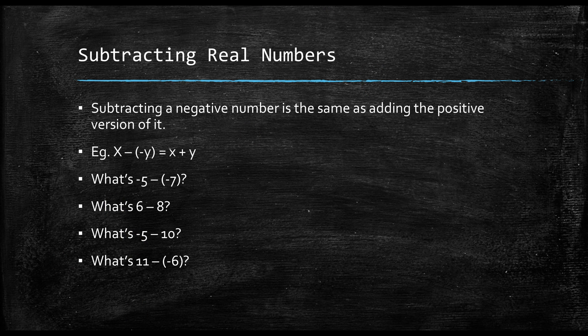For the first example, negative 5 minus negative 7, that's the same thing as negative 5 plus 7. So, when you work it out, the answer will turn into 2.